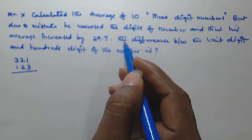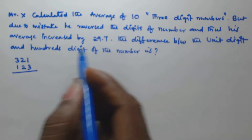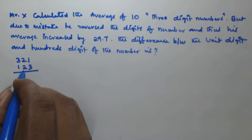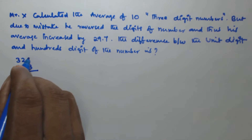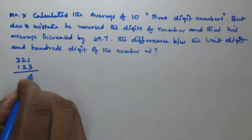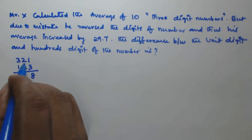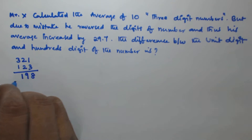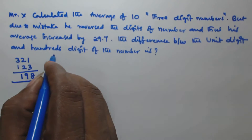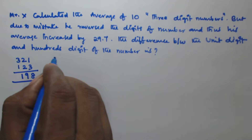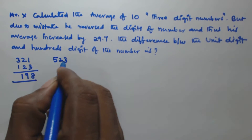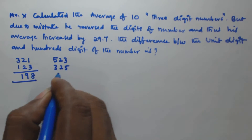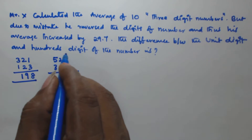We find the difference between these numbers because we need to find the difference between the unit digit and the hundred digit. Subtracting: 321 minus 123 gives 198. Now let us take another three-digit number like 523. If we reverse the digits, it becomes 325.